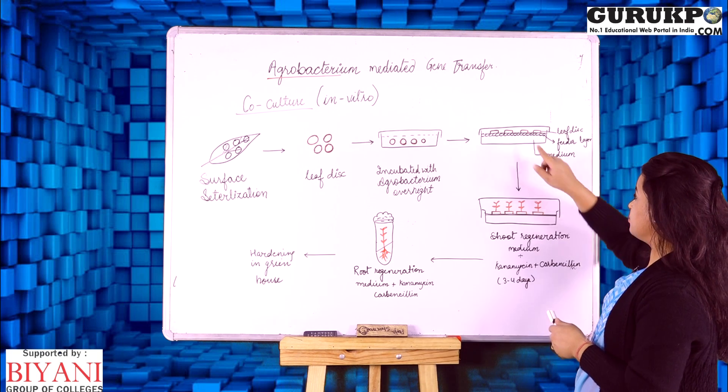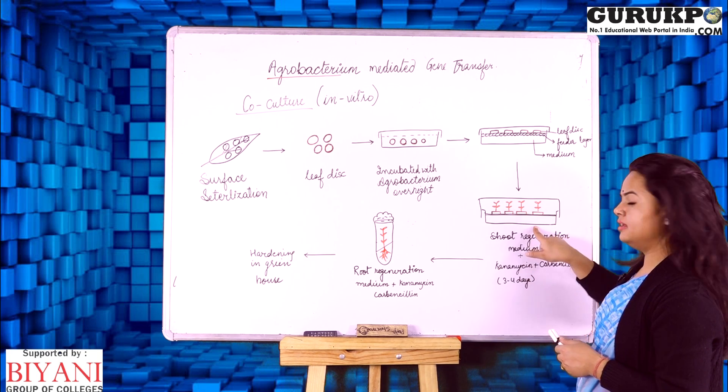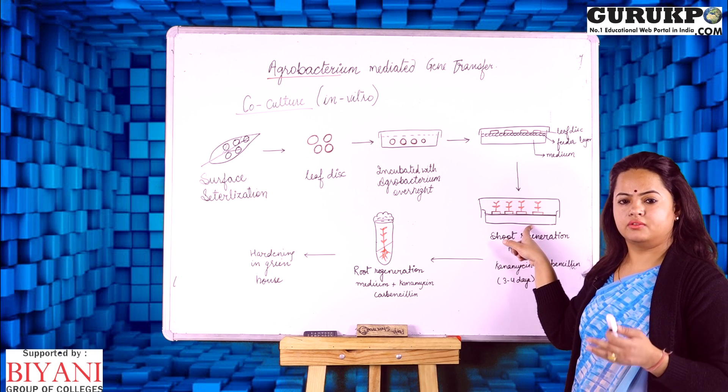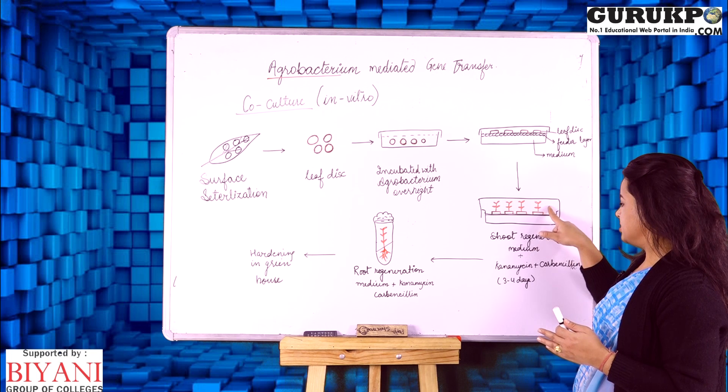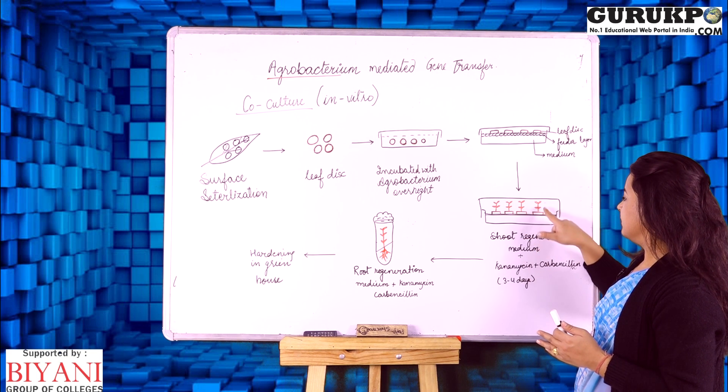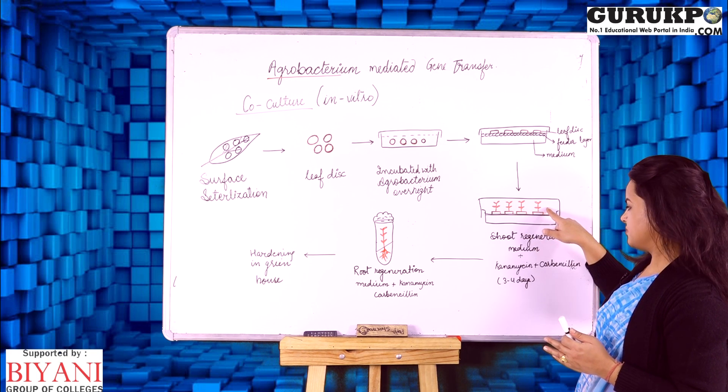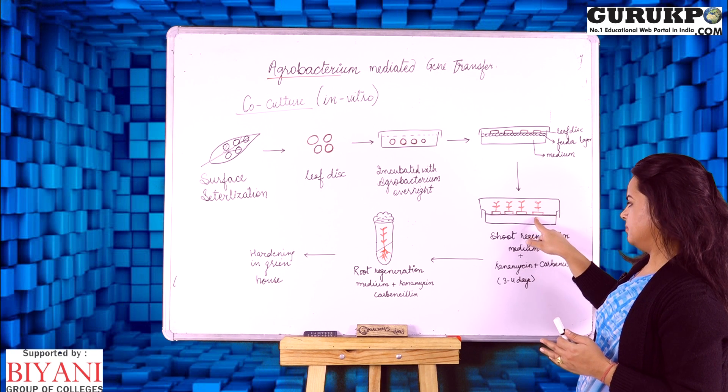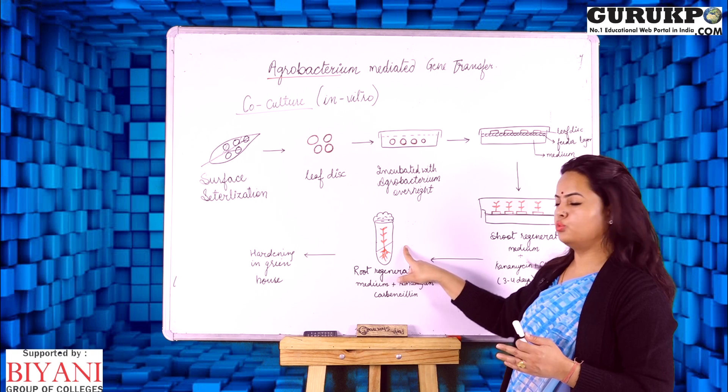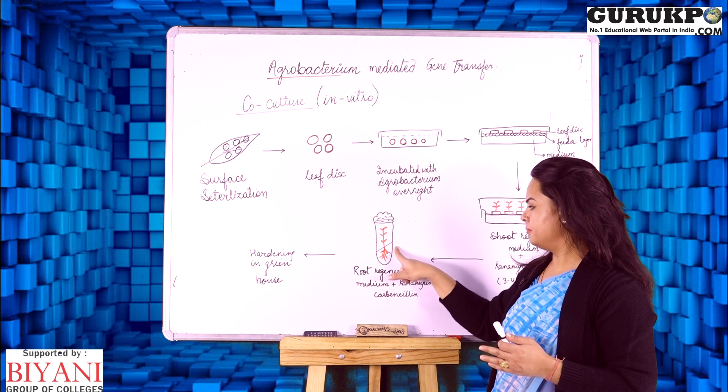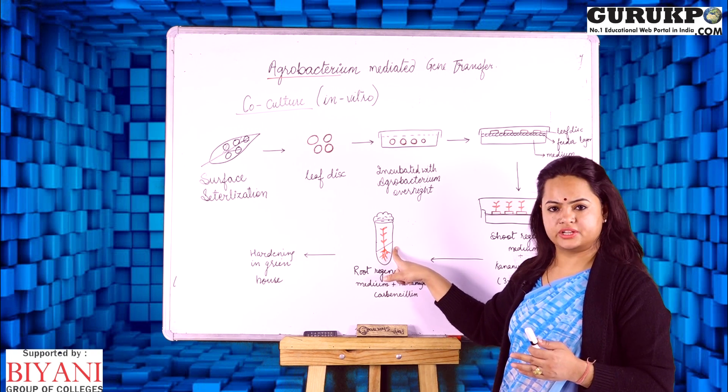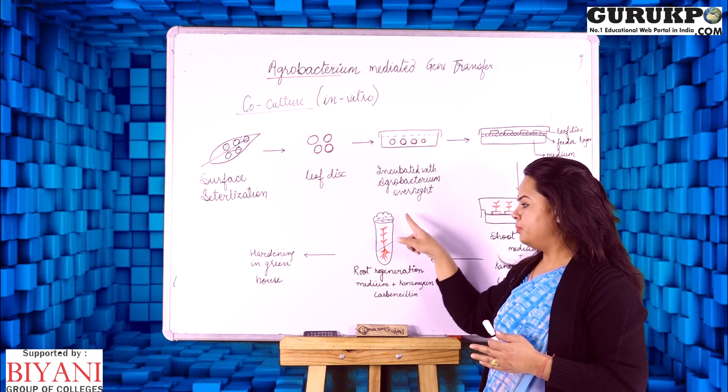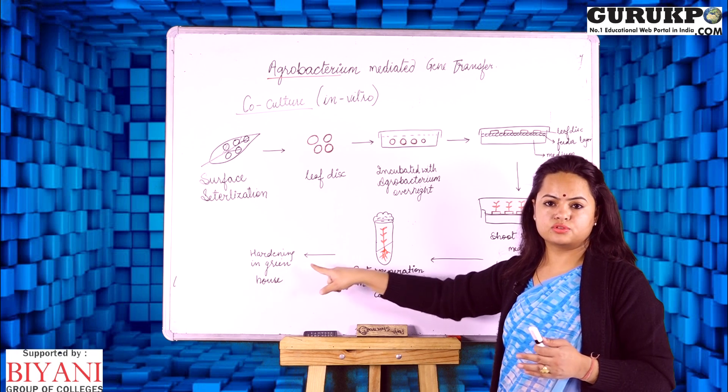For example, if we are going to supply the hormones in another petri plate, those hormones that are supporting the shoot regeneration, we will get that the shoot will be transformed and the same plant could be taken out from this petri plate and could be transferred to a boiling tube in the agar medium with the medium which is supporting the root generation in the current transformed plant.